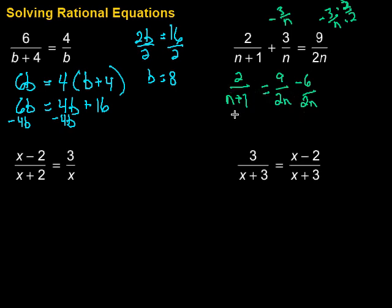Then, got to do a little clean up here. So this is going to be 2 over n plus 1 equals, my common denominator is 2n. And then, 9 minus 6 is 3. So then, we're finally at the point where we can do our cross products.